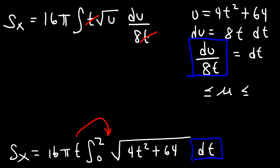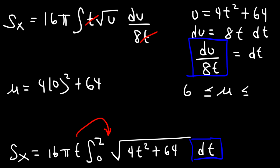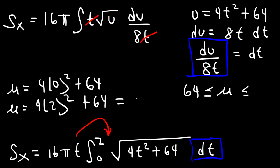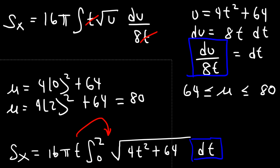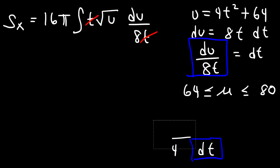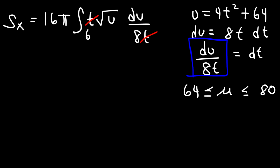Now we need to find the new limits. When t is 0, u is going to be 4 times 0 squared plus 64, so it's just 64. When t is 2, it's going to be 4 times 2 squared plus 64, which is 16 plus 64, so that's 80. So we now integrate from 64 to 80.